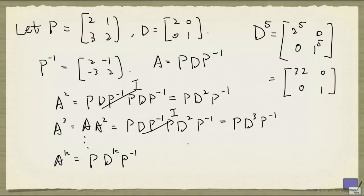And so if you want to know what A to the 1000 is, well, it's simply P times D to the 1000 times P to the minus 1. And this will be P times 2 to 1000, 0, 0, 1, P inverse.